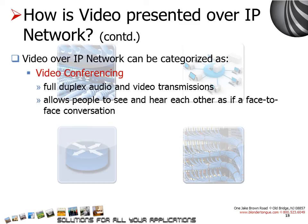Third is video conferencing. Video conferencing is a combination of full-duplex audio and video transmissions which allows people in two different locations to see and hear each other as if participating in a face-to-face conversation. Video conferencing can be point-to-point — that is one user to one user — or multipoint, that is multiple users participating in the same session. We hope this has helped you get a head start on the IP basics. Please see the support section of Blondetongue's website for more help. Thank you.